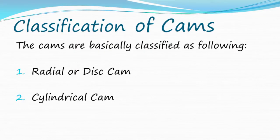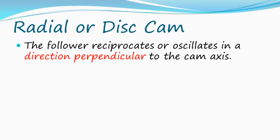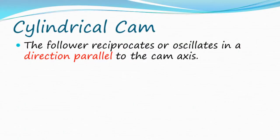Classification of CAMs: The CAMs are basically classified as following - Radial or Disc CAM, Cylindrical CAM. The follower reciprocates or oscillates in a direction perpendicular to the CAM axis. Cylindrical CAM: The follower reciprocates or oscillates in a direction parallel to the CAM axis.